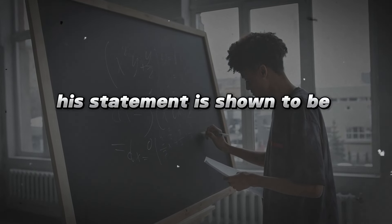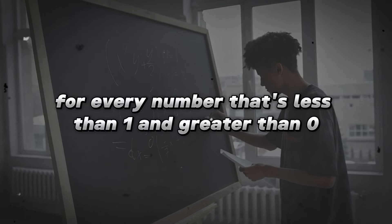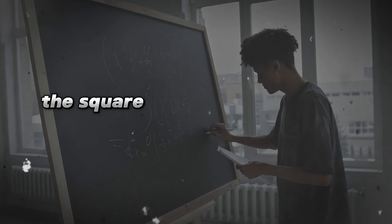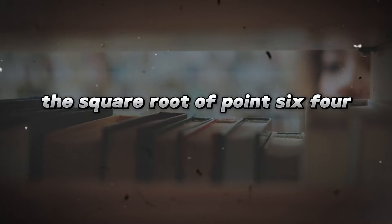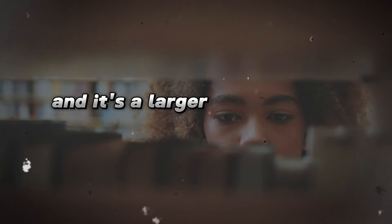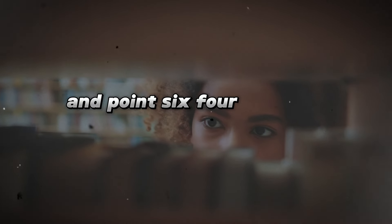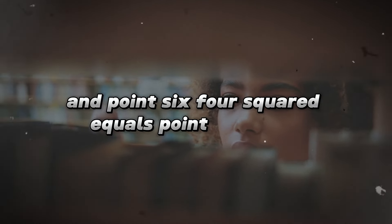His statement is shown to be false for every number that's less than one and greater than zero. For example, the square root of 0.64 is 0.8. 0.8 is bigger than 0.64, and it's a larger number than the original. And 0.64 squared equals 0.4096, a smaller number than the original.